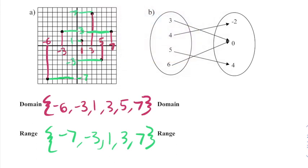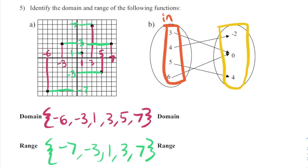I think the mapping is probably the easiest because it's already in numerical order. These are my inputs and these are my outputs. Inputs are domains, so 3, 4, 5, 6. And outputs are the range, so -2, 0, 4.